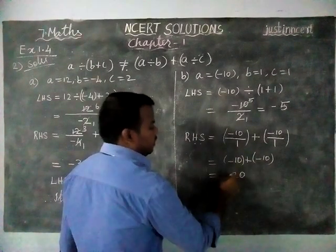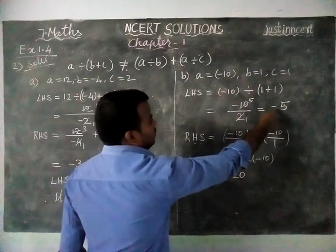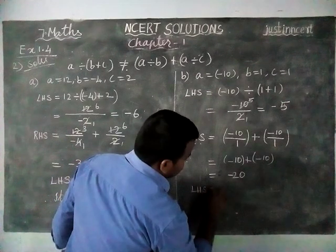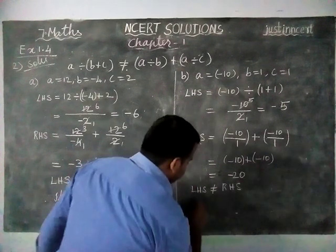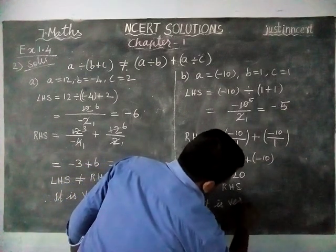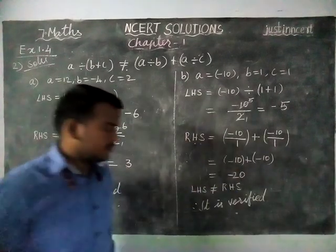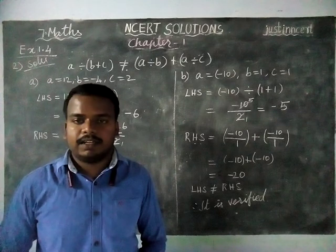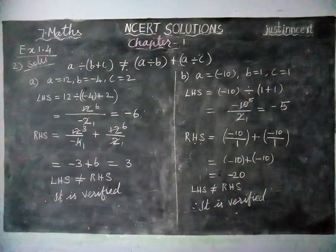Left hand side is minus 5, right hand side is equal to minus 20, so LHS is not equal to RHS, therefore it is verified. Thank you students. Those who are watching, kindly subscribe our channel and share it with your friends also. Thank you.